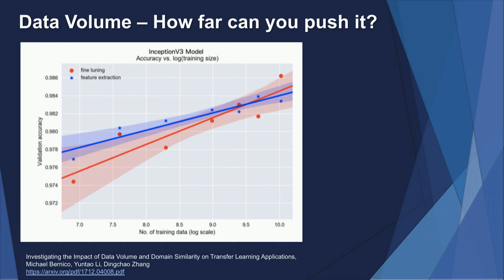Whenever I'm doing a computer vision problem, I have the same conversation with business partners: 'I have this CV problem I need solved.' 'What data do you have?' 'How much data do you need?' 'How much do you have?' It's a race condition. So we got curious: in transfer learning, how much data do you actually need? My colleagues Yun Tao Li, Ding Chaozeng, and I decided to do some research, and we wrote a paper called 'Investigating the Impact of Data Volume and Domain Similarity on Transfer Learning Applications.'